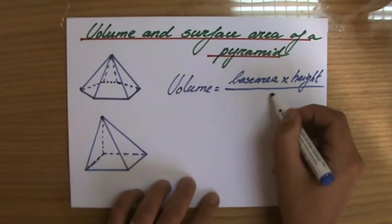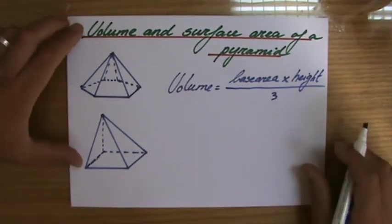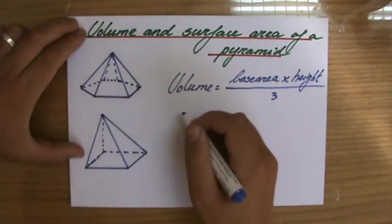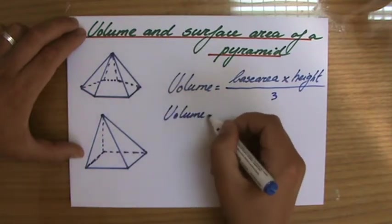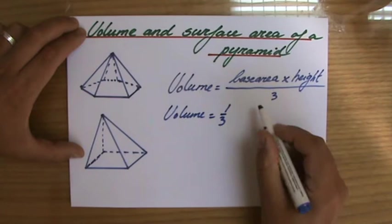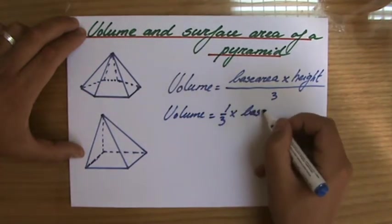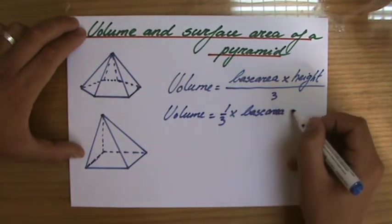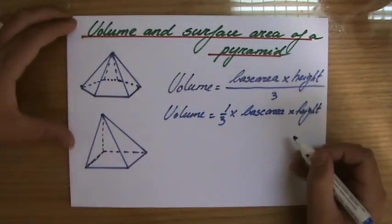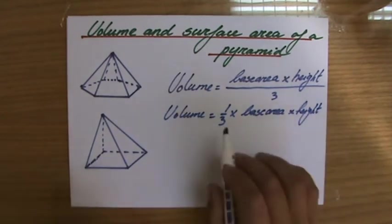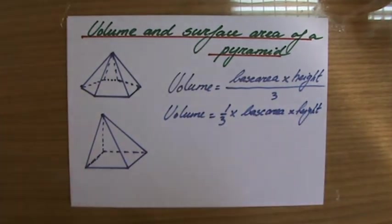And all of that I divide by three. That's going to give me the volume of a pyramid. So you could also say the volume of a pyramid is one over three, a third, times the base area times the height. So divide by three times a third.